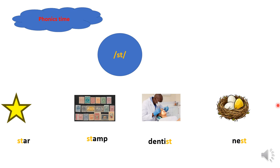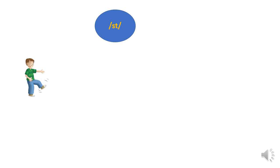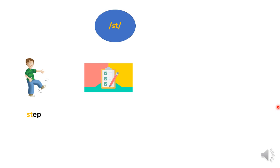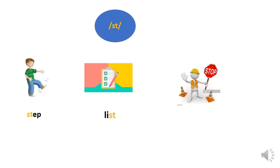The word 'nest' ends with 'st'. The next word for the ST sound is 'stop'. This boy is stopping by his foot — stop. The word 'stop' also starts with 'st'. The next one is 'list' — that is a list. And 'stop' — when you are walking or talking and I want you to stop, I say 'stop', so you stop speaking and be quiet. That is the word 'stop'.